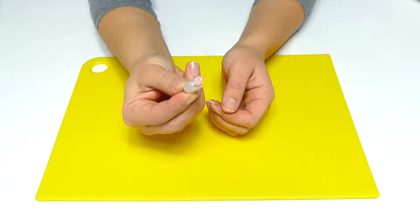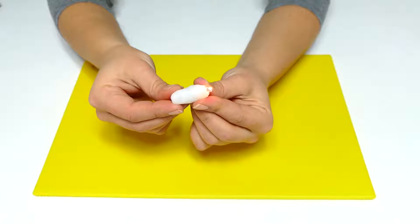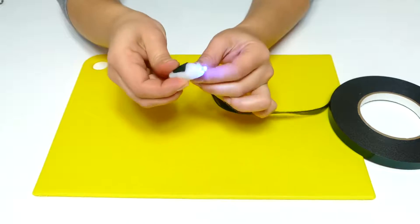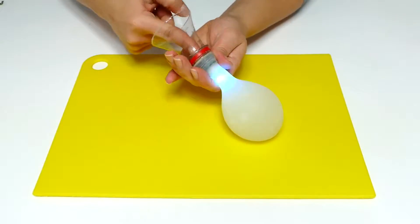Take a radiant LED balloon light and cover it with a moldable plastic to make it bigger. Then we'll stick a black tape around it and put it into the balloon.